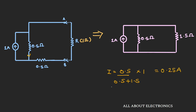Using the current divider rule, the current flowing through the 1.5-ohm branch is 0.5 / (0.5 + 1.5) × 1 = 0.25 ampere. Therefore, the current I1 flowing through resistor R is 0.25 ampere.